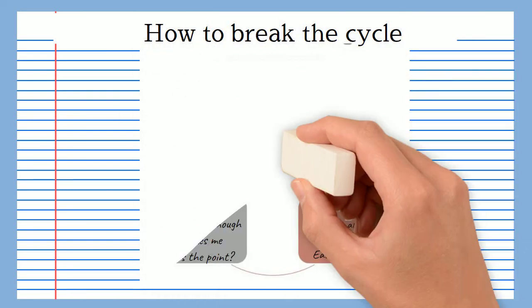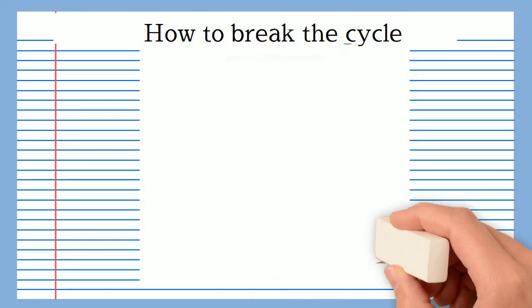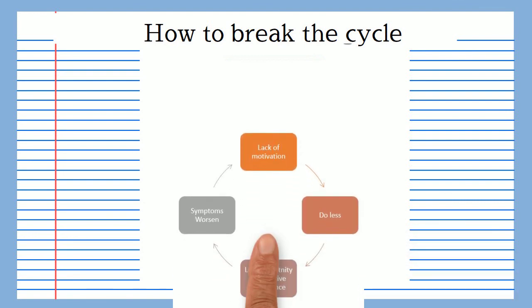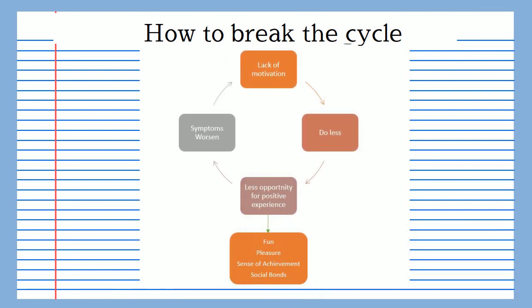Once the patient is happy with the ABC model it is time to discuss the vicious cycle, which is what CBT believes is keeping their symptoms going. In this case we're going to look at the cycle of reduced activity which underlies the behaviour activation treatment. We would explore with the patient how these symptoms are linked, using questions to aid the guided discovery approach.